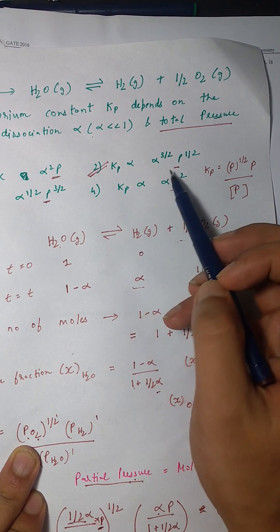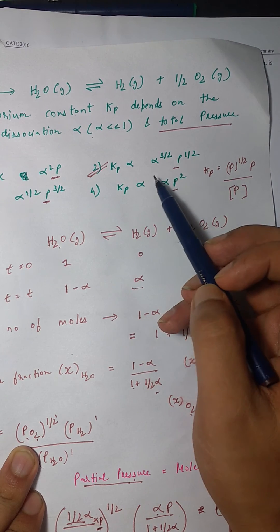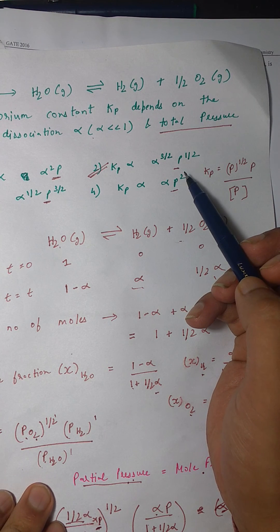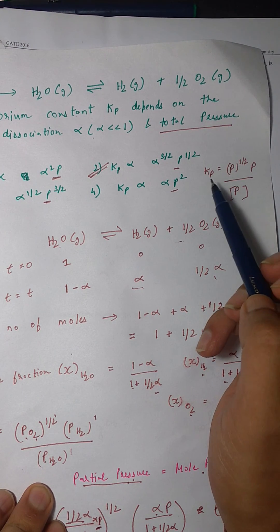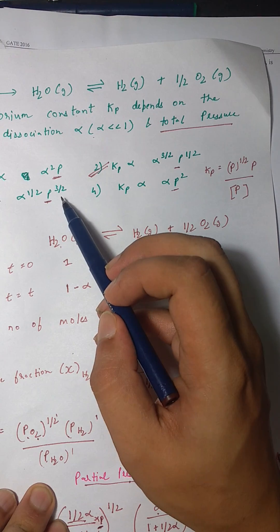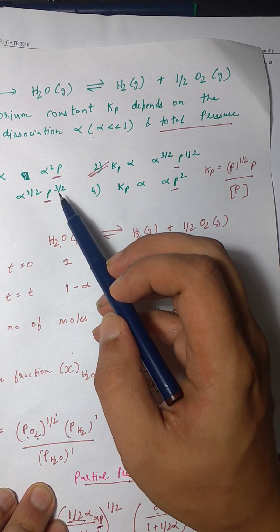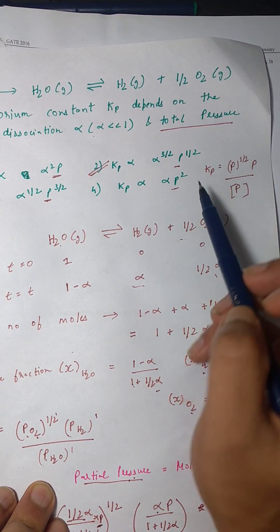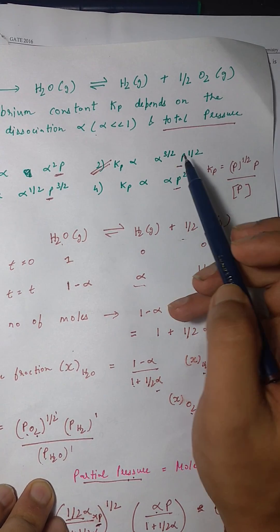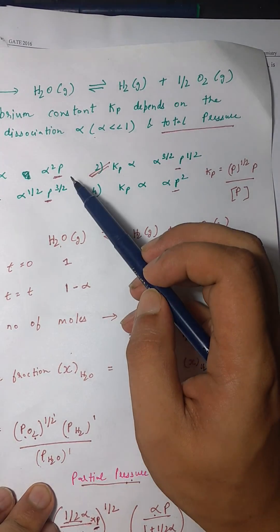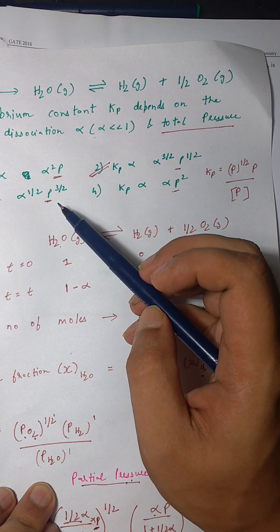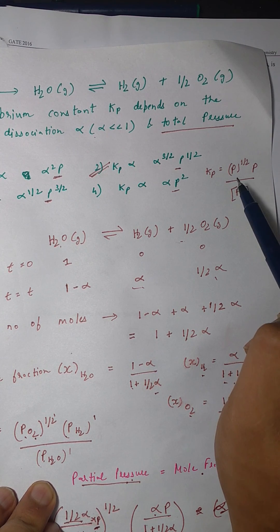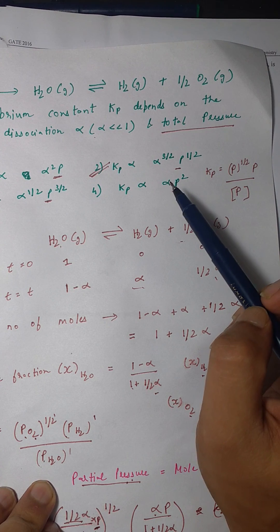If two options had the same pressure term, you would then need to calculate the alpha value to distinguish them. But even then, start with the pressure approach first. If the pressure alone gives a unique match, you're done. Only if two options share the same pressure exponent should you go ahead and calculate the alpha dependence as well.